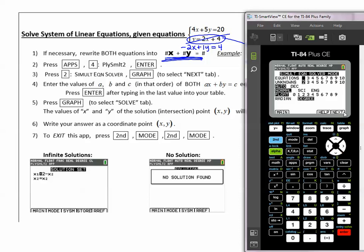And now I need to press next, which is the button under graph. And I can plug my numbers into this system. So the first equation has a 4, a 5, and a 20, all of them positive.